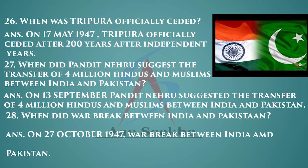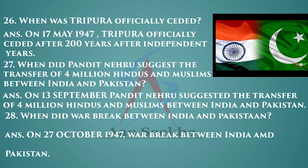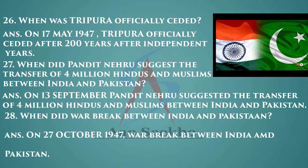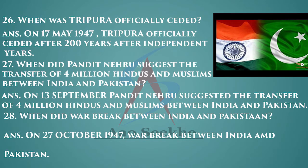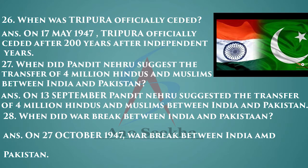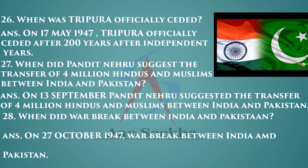When did Pandit Jawaharlal Nehru suggest the transfer of four million Hindus and Muslims between India and Pakistan? When did war break out between India and Pakistan? On 27th October 1947, war broke out between India and Pakistan.